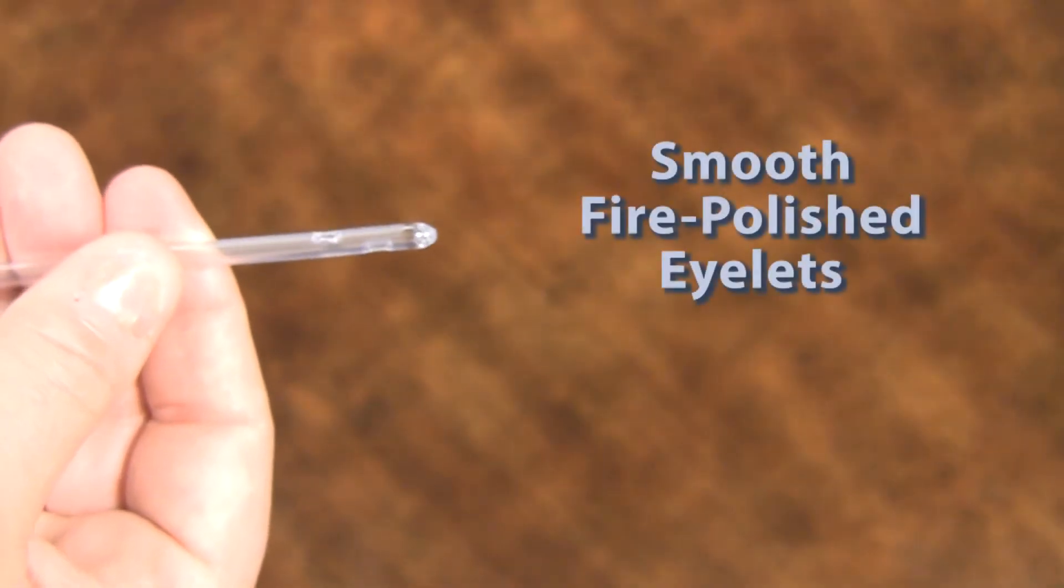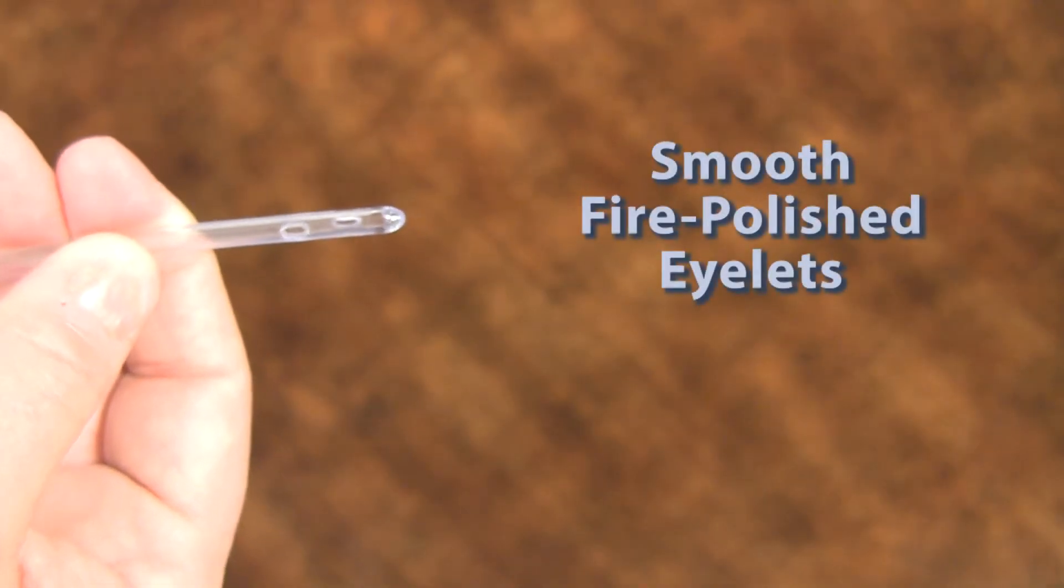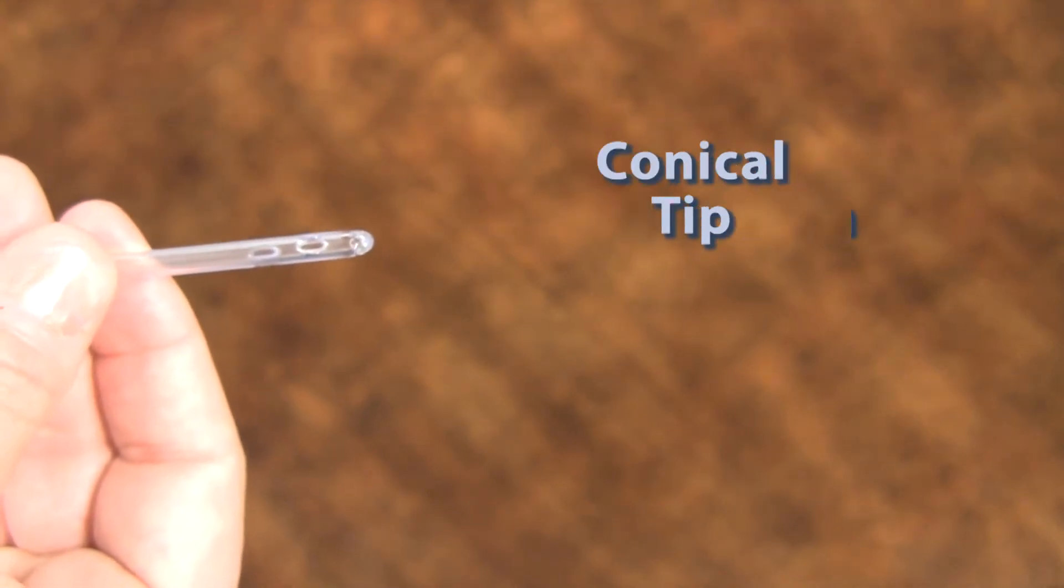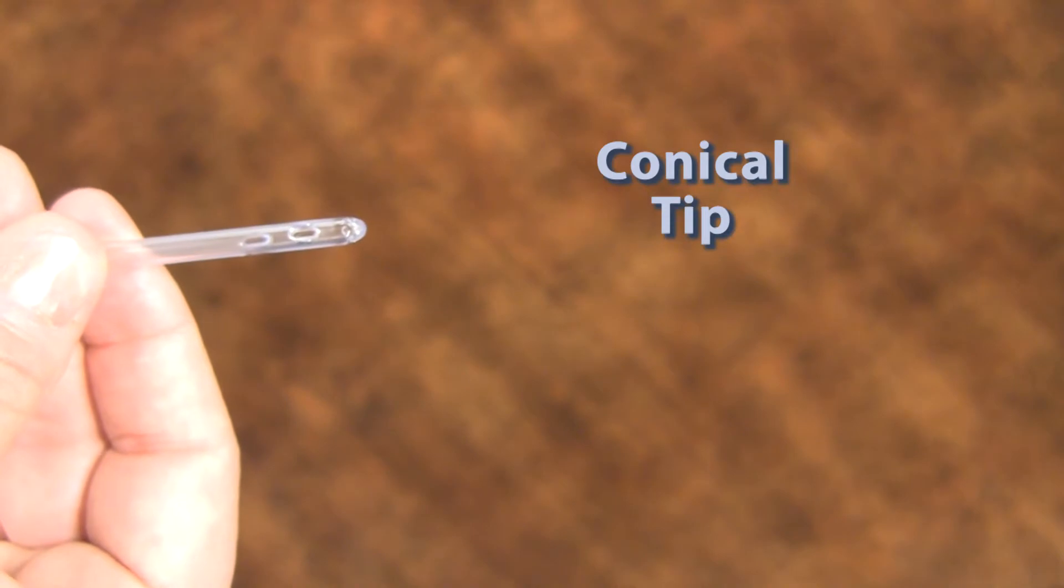MTG's catheter eyelets or drainage holes are fire polished so they're less likely to cause irritation as the catheter winds its way through the urethra. We also have a conical tip which helps the catheter pass tight spots along the way.